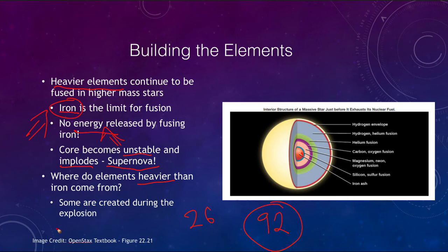Well, it is believed that some of them could be created during the explosion itself. So during the massive energy of the explosion, heavier elements could be fused together. It's also believed that sometimes in the collision of neutron stars, heavier elements could be created. So there are some other ways to build up those heavier elements.